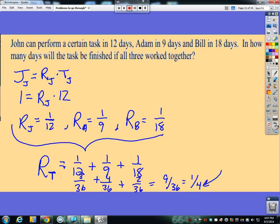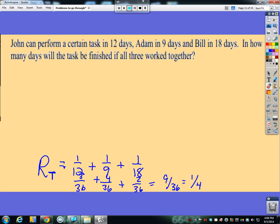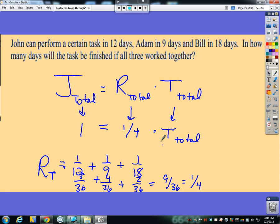So in total, they can do one job per four days. Now that's the answer right there. But let's put this into a little bit more context. If we talk about total, jobs total equals rate total times time total. Now we're only doing one task. Their total rate is the one-fourth we talked about, and time is what we are solving for. If we multiply both sides by four, that cancels, and four times one is four. So working together, it would take them four days.